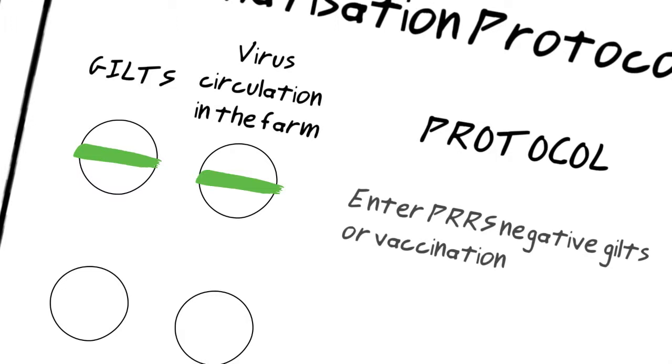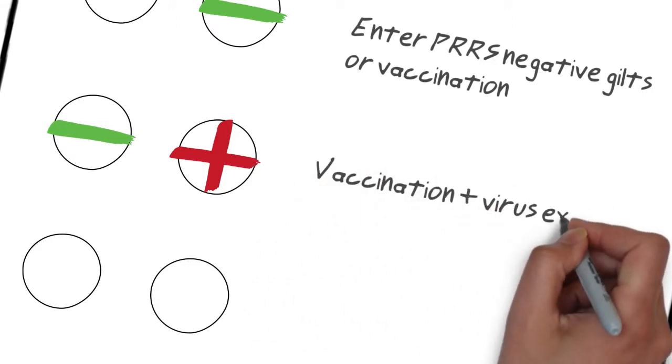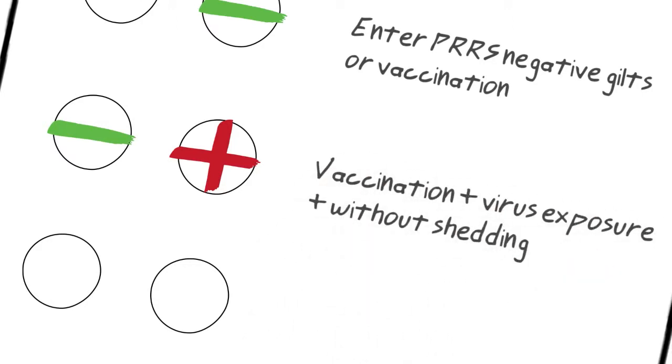If gilts arrive negative to PERS, and at the farm of destination the virus is circulating, we have to vaccinate gilts and then expose animals to the virus strain of the farm. Prior to introducing animals to the breeding herd, we must ensure that there are no viremic and no excreting animals.